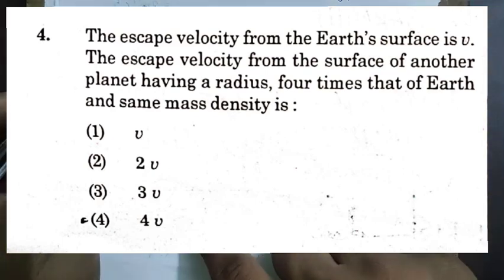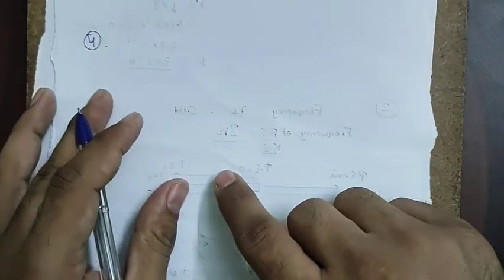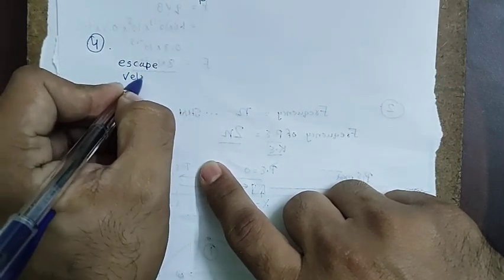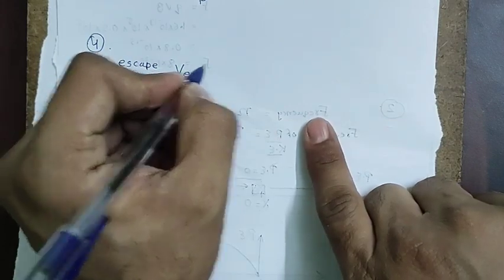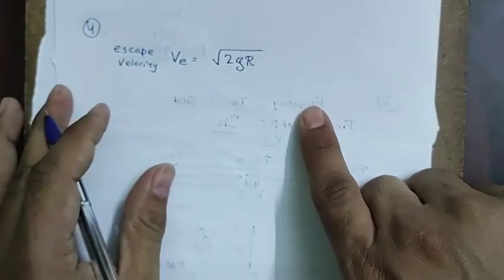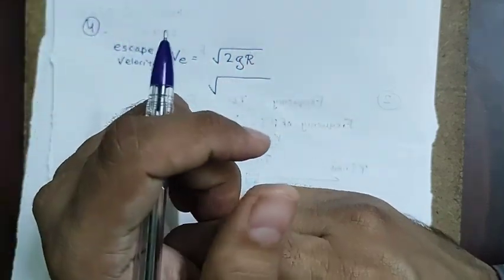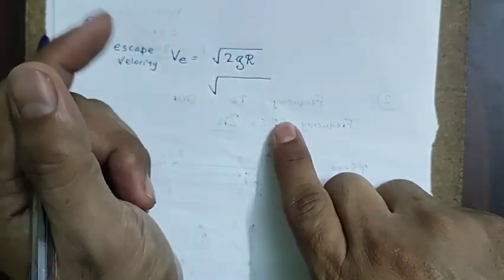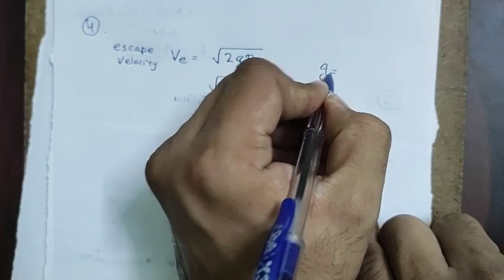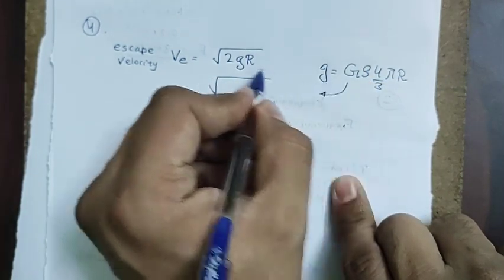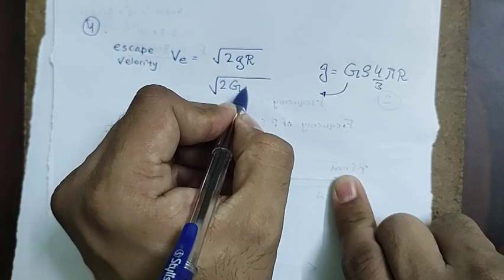Question 4 is from the gravitation chapter, based on escape velocity. Escape velocity is given by √(2gR). Since the densities of Earth and the other planet are the same, we convert the formula using g = (4/3)πRρG. Substituting, escape velocity becomes proportional to R when density is constant.